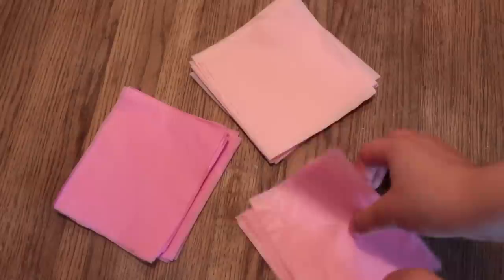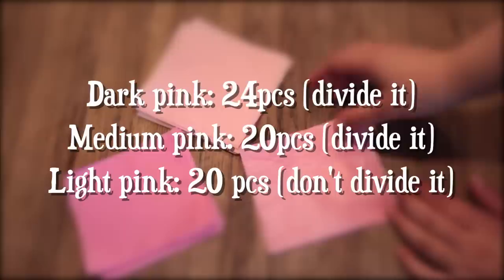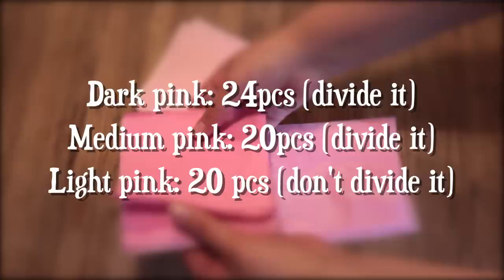You can also cut out a lot of different shades of the same color like I have. Now if you want to create the ombre flower, you need to take your darker colors and divide that by 2. And these numbers here are what I use to create the ombre flower.